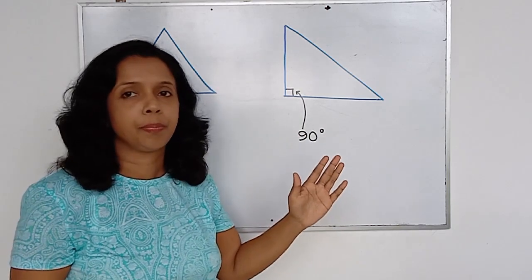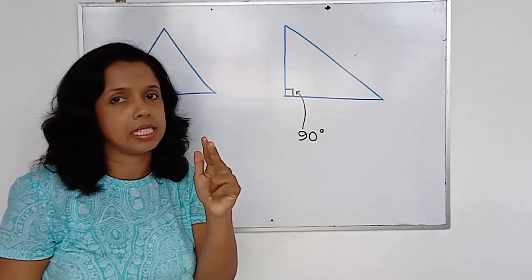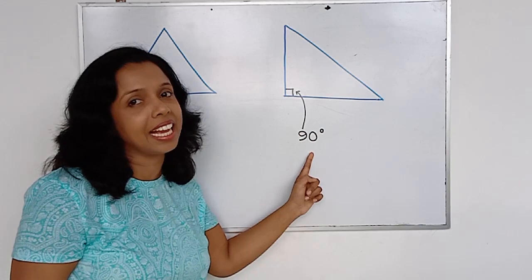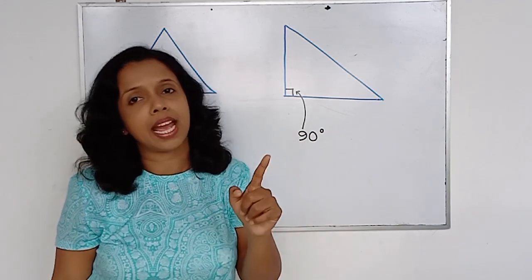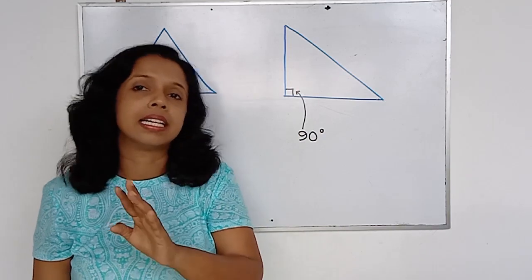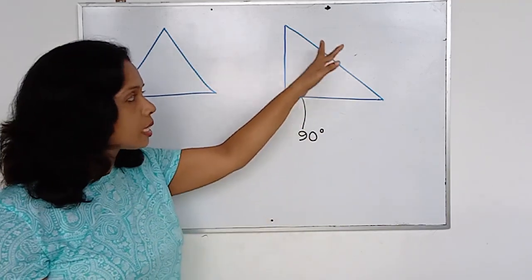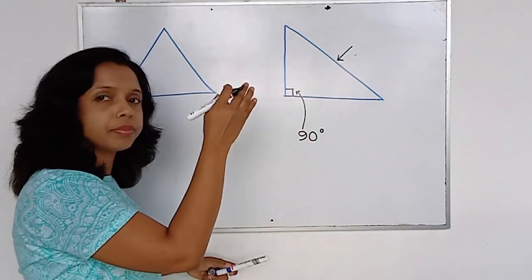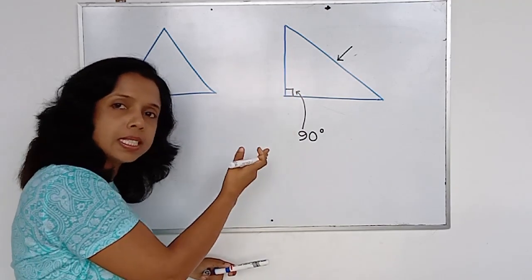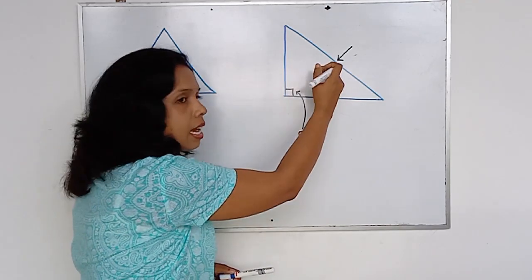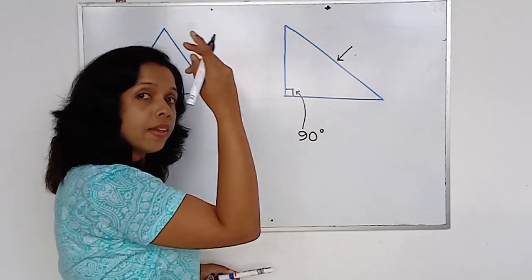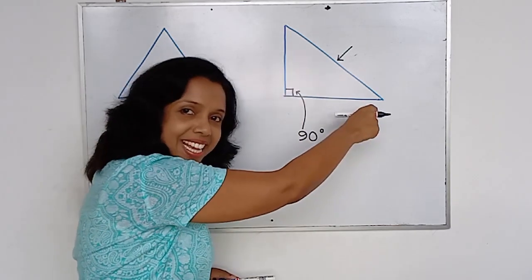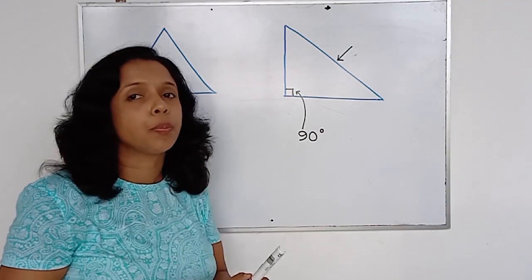Any triangle has three interior angles. Out of these three interior angles, one is 90 degrees, a right angle. The side which is exactly opposite to the right angle — out of these three sides, the longest side — we name as hypotenuse.